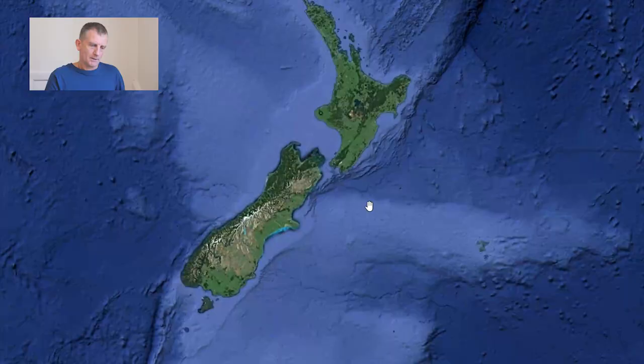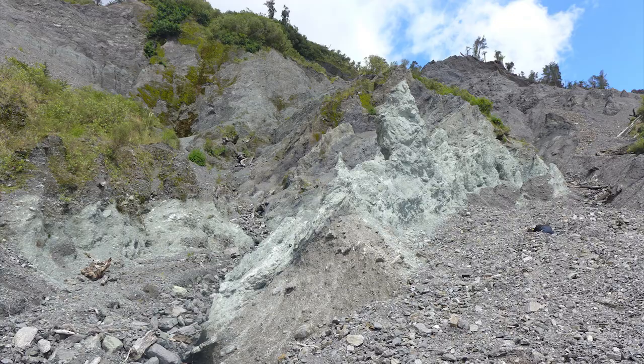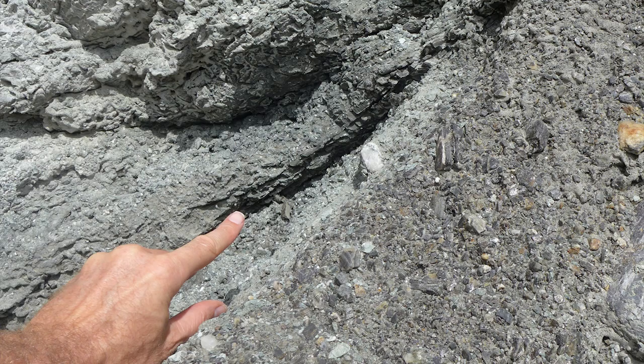In the South Island, there is actually a place where you can put your finger on the plate boundary — a cliff section at Gaunt Creek. On one side is pale coloured rock of the Pacific plate, which has been pushed up from many kilometres deep in the earth, riding over the younger rocks on the Australian plate. In this photo you can see someone literally putting their finger on the plate boundary.